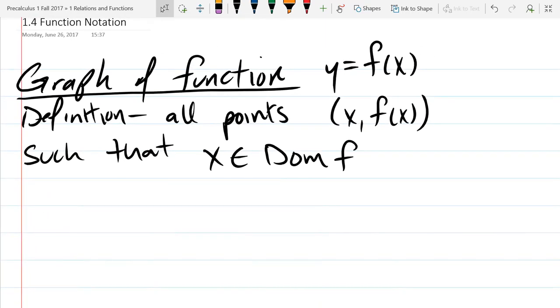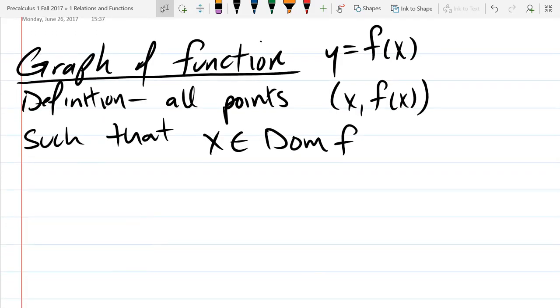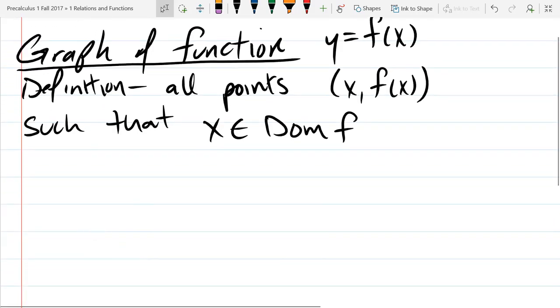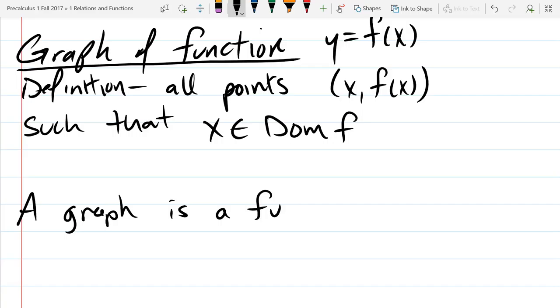So this is the definition of a graph of a function. Really similar to the graph of an equation. The graph of an equation is all points that satisfy the equation. And we have a vertical line test. So a graph is a function if it passes the vertical line test.